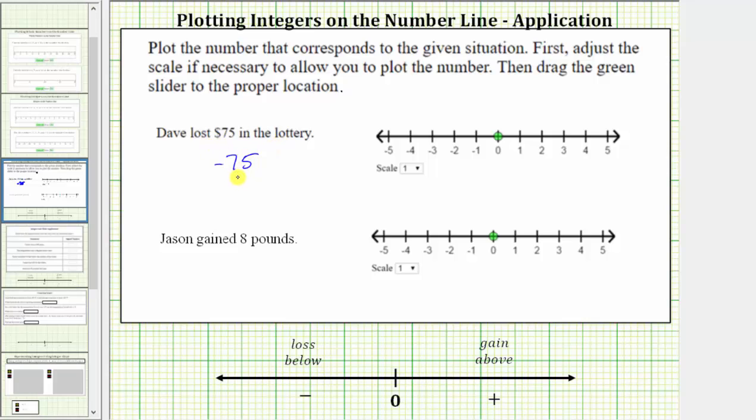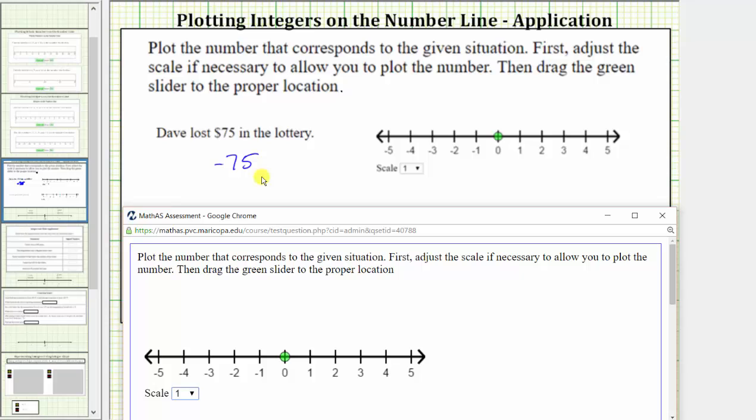Now we need to plot negative 75 on the number line. Let's bring up the interactive number line. Negative 75 is located 75 units to the left of zero. Notice right now negative 75 does not show on the number line. We need to change the scale. We change the scale by using this drop-down menu. If we change the scale to tens, notice negative 75 is still not on the number line.